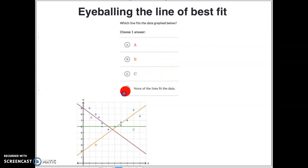So, is there any one line that fits those blue dots really, really well for all of the blue dots? And your answer, again, would be no, there isn't. So, this would be another example of none of the lines fit the data.